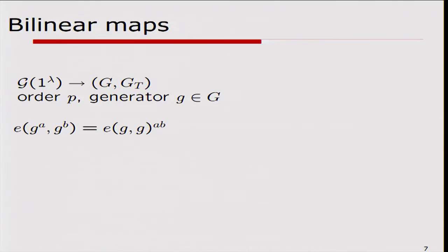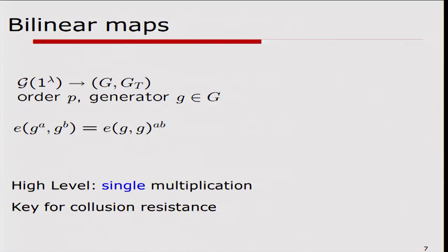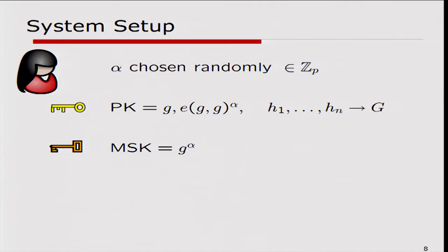Let me recall what bilinear maps are, just to set the notation. We have groups G and G_T, both of prime order p, with generator g for the group G. We have this additional bilinear map that maps two elements of the group G — say g^a and g^b — and you get e(g,g)^{ab}. So I get egg^{ab}. The high-level idea is that you get a single multiplication, and this is what allows for getting collision resistance, so even if two people come together, they can't pool their attributes.